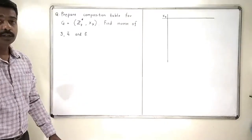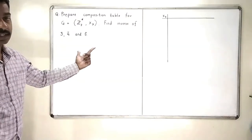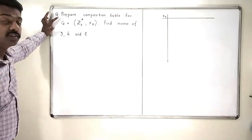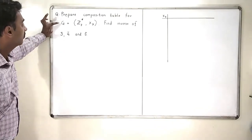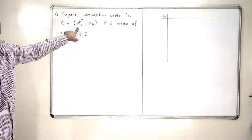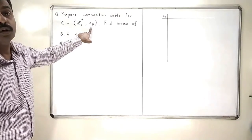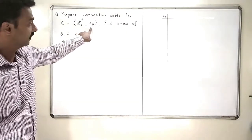Now, we will see the next problem in this section. We have to prepare a composition table for Z7 star, and the operation that we are going to use is multiplication modulo 7.